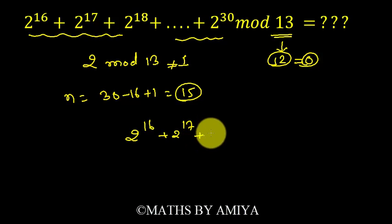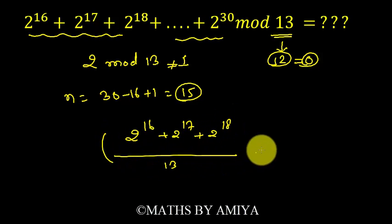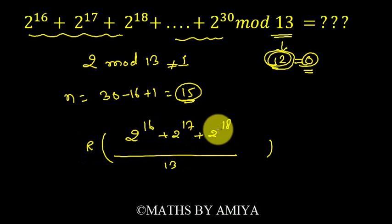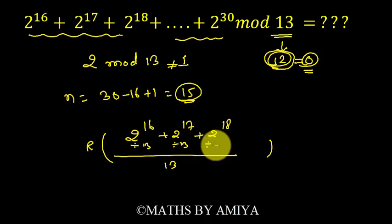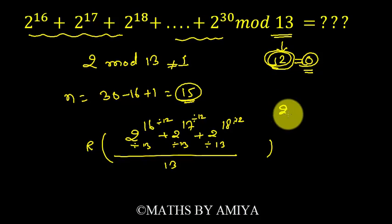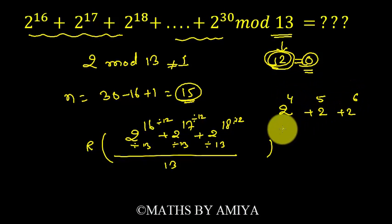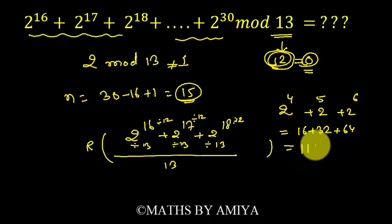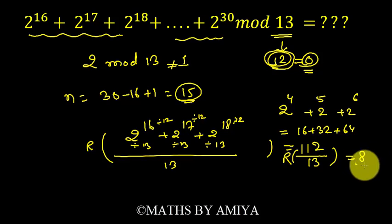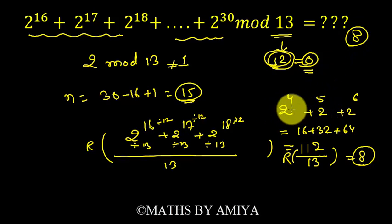Work on the first three terms: 2^16 + 2^17 + 2^18, divide by 13. For each: 2 divided by 13 gives remainder 2 in all three cases. Powers: 16 ÷ 12 gives remainder 4; 17 ÷ 12 gives remainder 5; 18 ÷ 12 gives remainder 6. So we compute 2^4 + 2^5 + 2^6 = 16 + 32 + 64 = 112. Since 112 is more than 13, divide 112 by 13: the final remainder is 8.